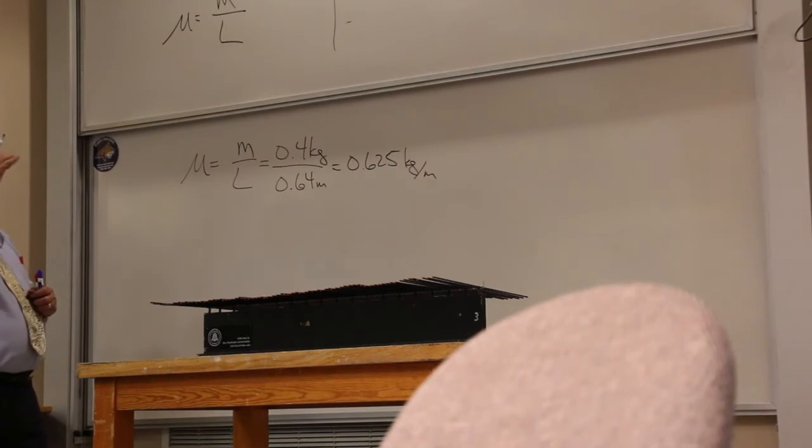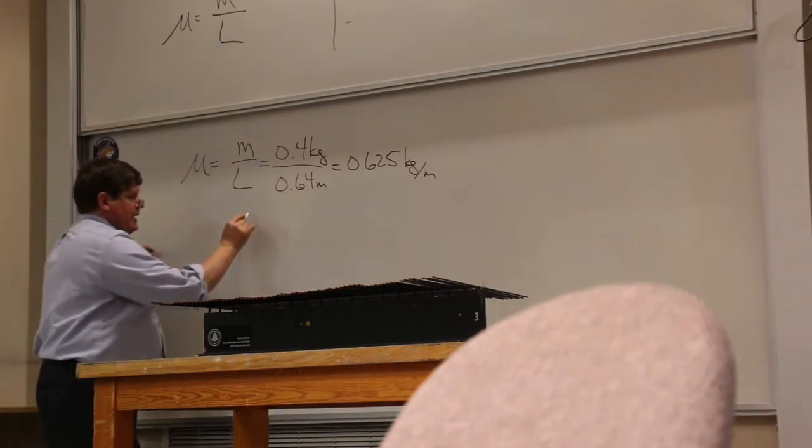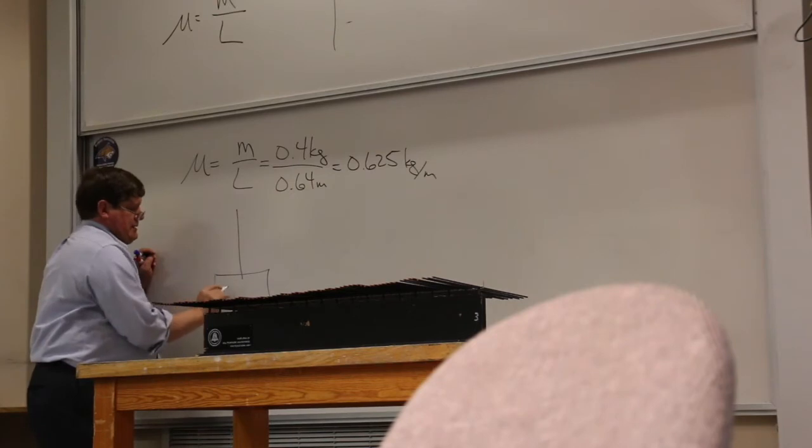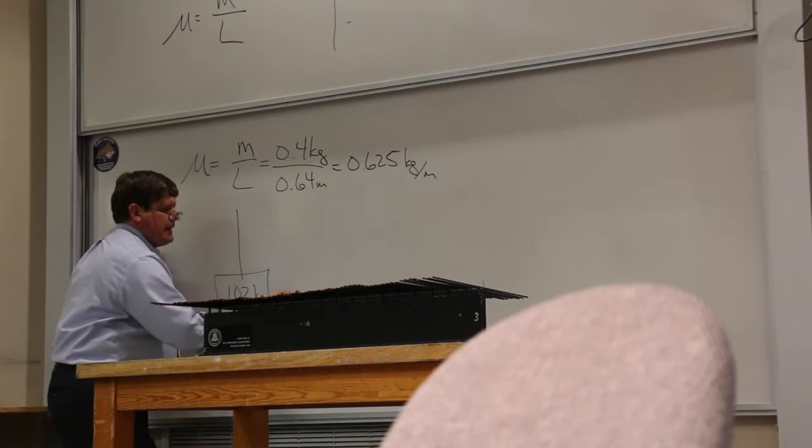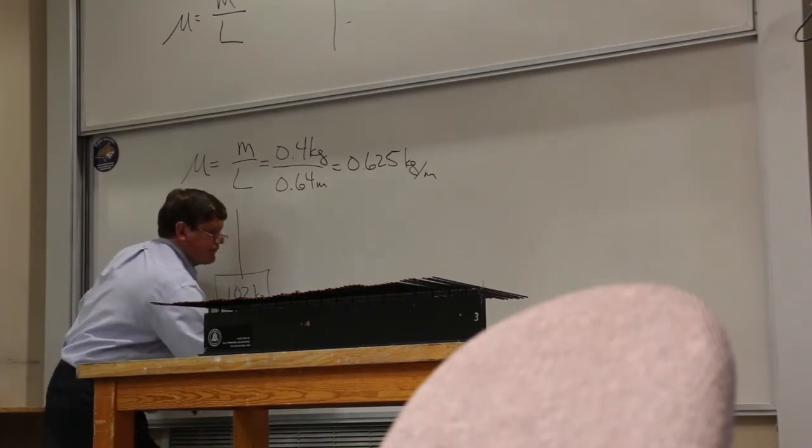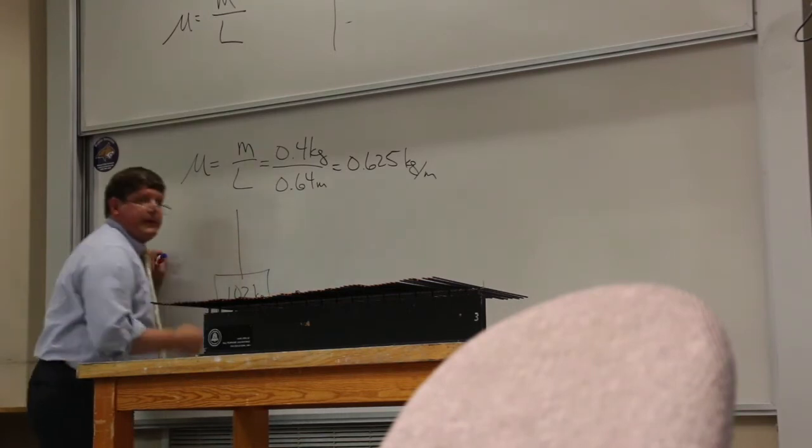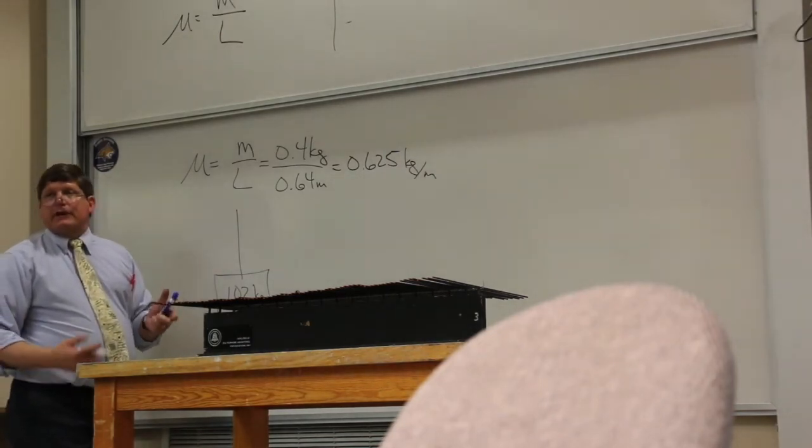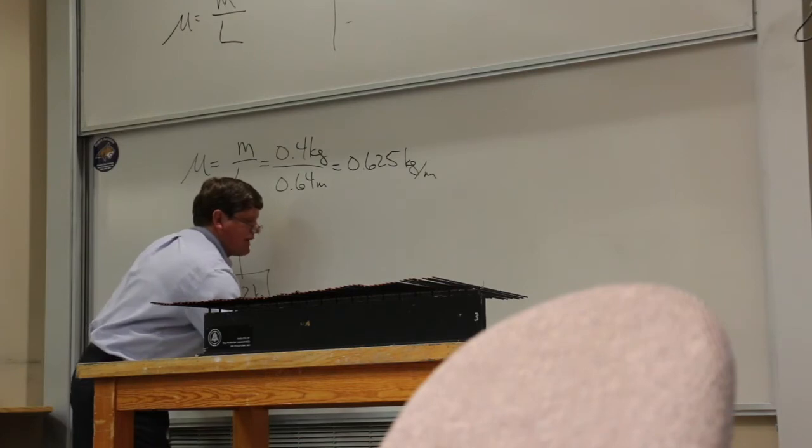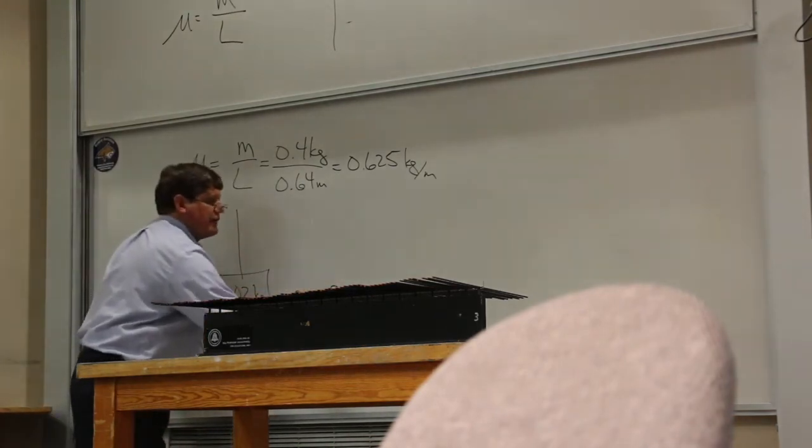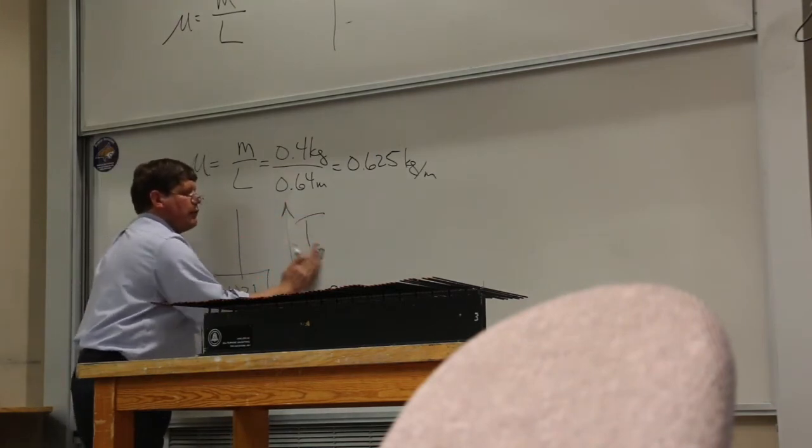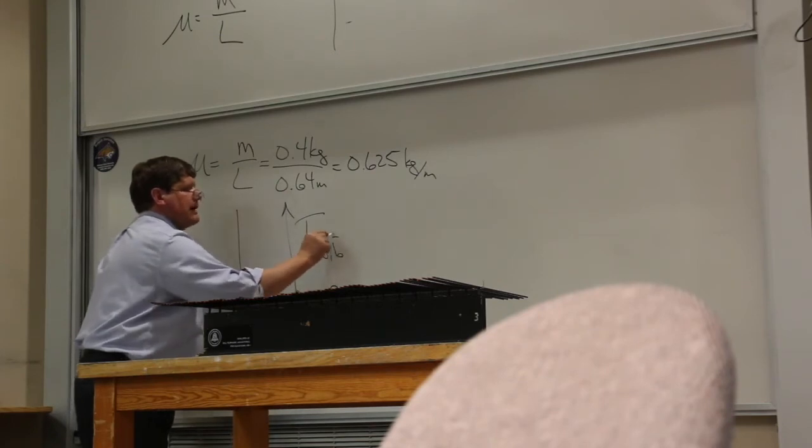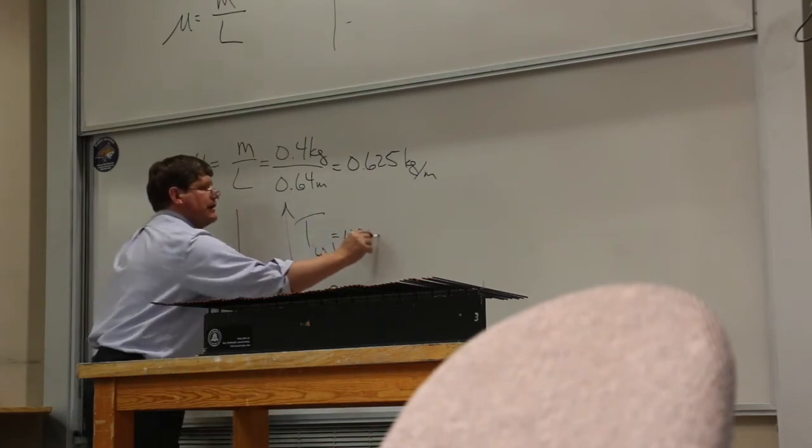Now, the tension we find from a free-body diagram. If I draw a free-body diagram for this block, I have a gravitational force, and that's going to be, if we take the gravitational field strength to be 9.8, call it 10, that's going to be 1,020 newtons. Now, it's just sitting there with no acceleration, so that means that the only other force, the tension force by the wire on the block, has to be 1,020 newtons.